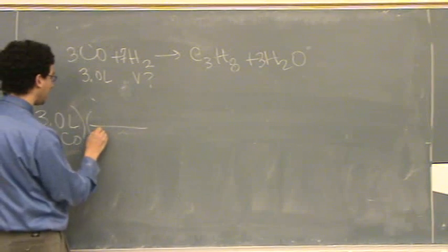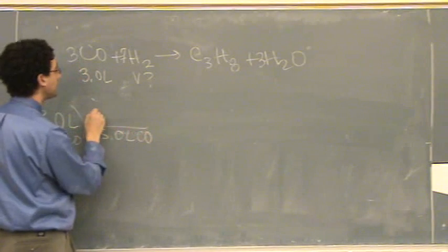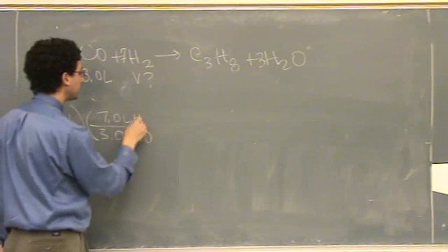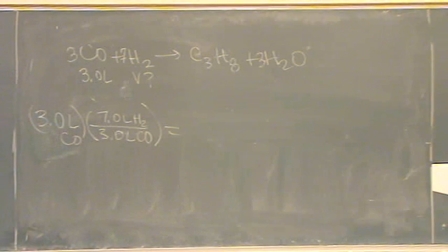So now we say that there's 3.0 liters of CO for every 7.0 liters of H2. There we go.